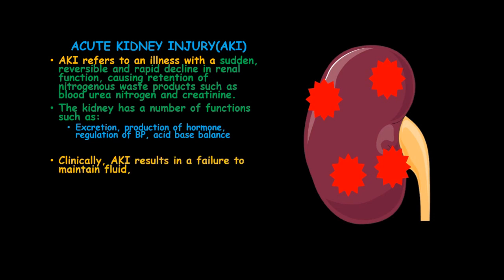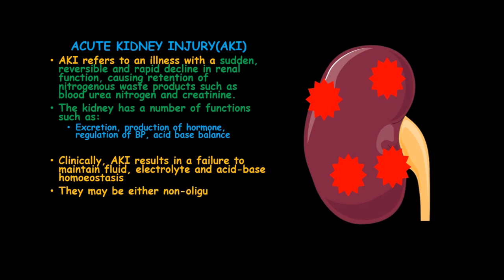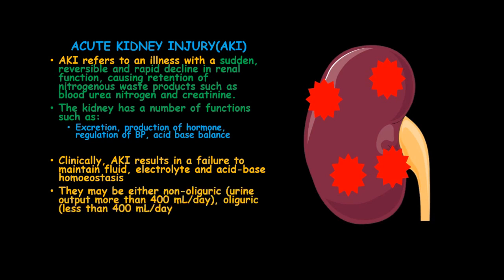Clinically, acute kidney injury results in a failure to maintain fluids, electrolytes, and acid-base homeostasis. There may be either non-oliguric, whereby the patient produces urine output more than 400 ml per day, oliguric with less than 400 ml of urine per day, or anuric whereby the patient produces less than 100 ml of urine per day.